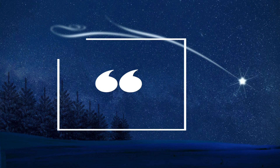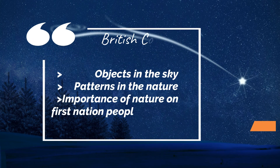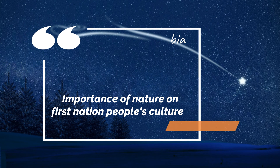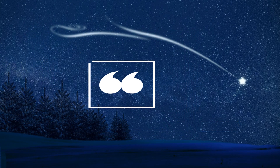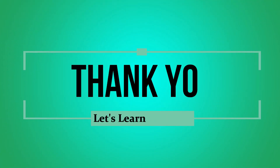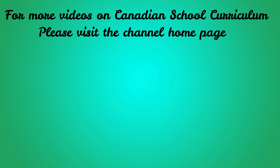In this unit, students learn about objects in the sky — the Sun, Moon, and stars. They also acquire knowledge about the importance of these celestial bodies and their significance in First Nations culture. BC students additionally learn about systems in this unit. If you are interested in knowing more about the Grade 1 curriculum for Canadian schools, please check the description box for other links and don't forget to check the channel homepage.